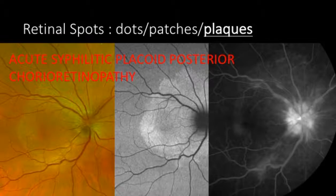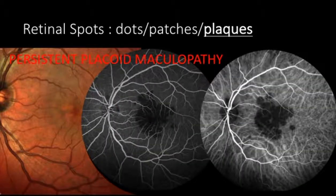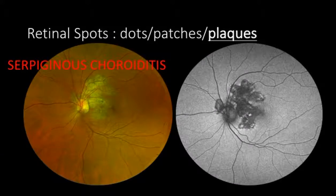Some patients may present with plaques. This is a patient with a yellow plaque on the posterior pole associated with optic disc edema that was hyper-autofluorescent and associated with optic disc and vessel leakage — a very pathognomonic manifestation of placoid posterior syphilitic chorioretinopathy. Another example is a plaque associated with marked hypofluorescence on both fluorescein angiography and ICG, which is very typical of persistent placoid maculopathy. Finally, similar plaques around the optic disc with a very typical serpiginous shape are characteristic of serpiginous choroiditis.